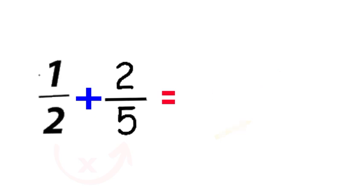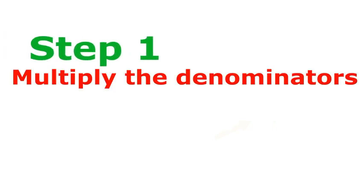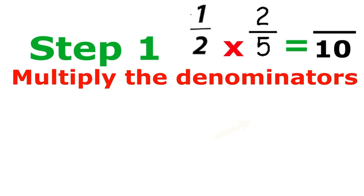Just a recap of these three easy steps. First, multiply the denominators together to get your new denominator, which you put on the other side.